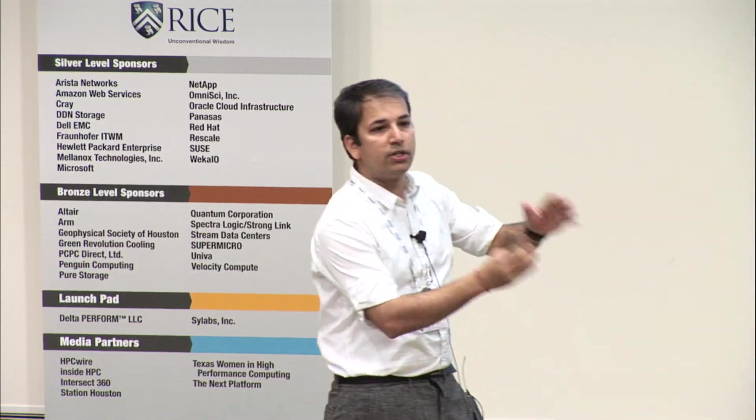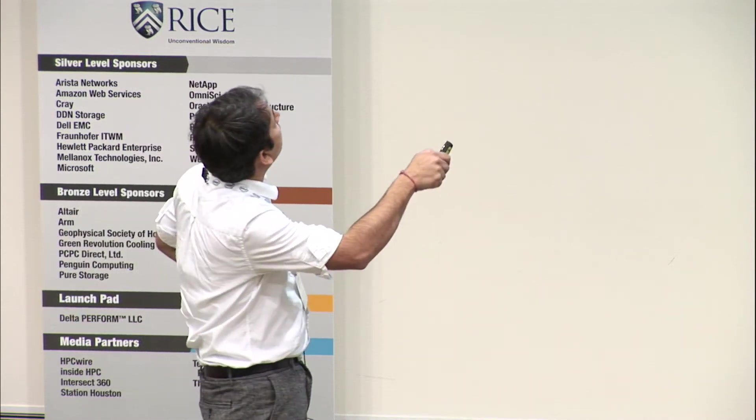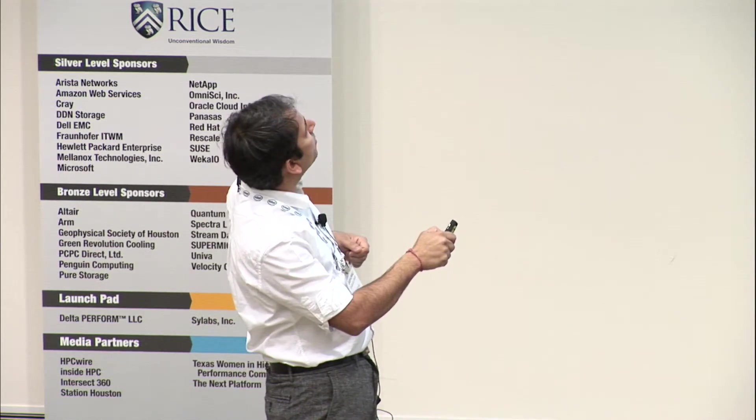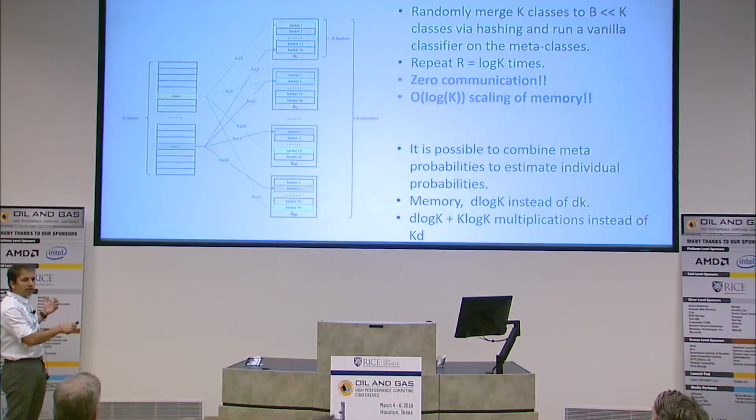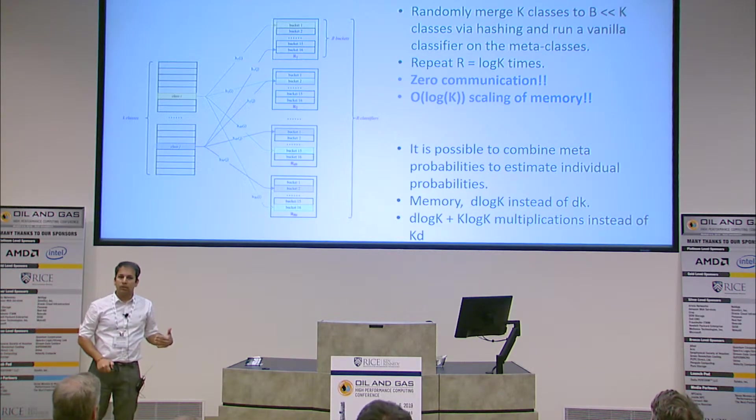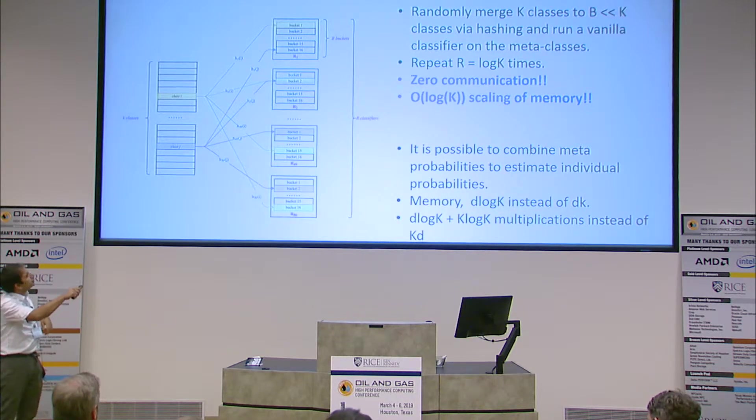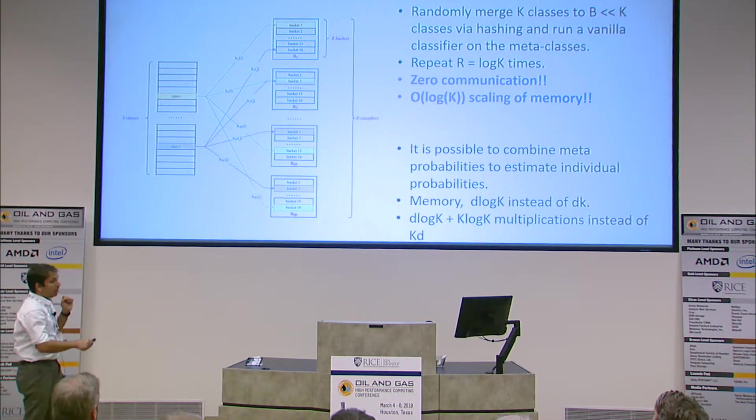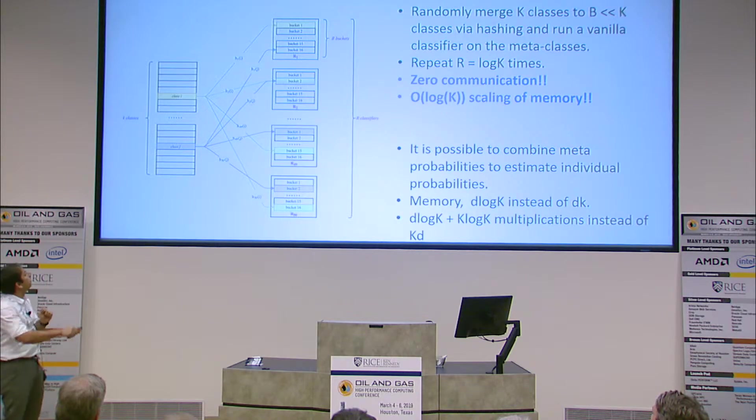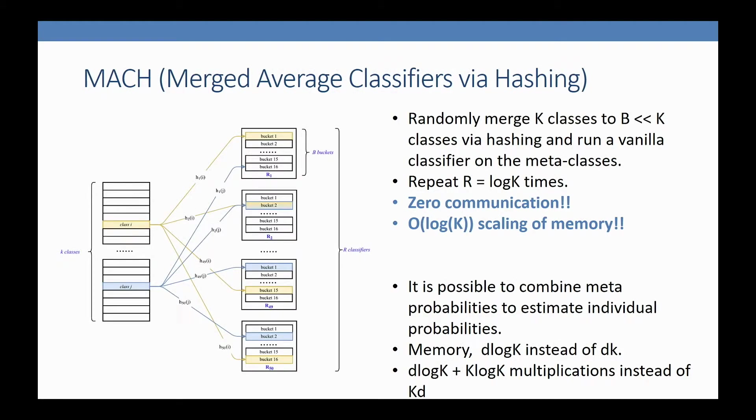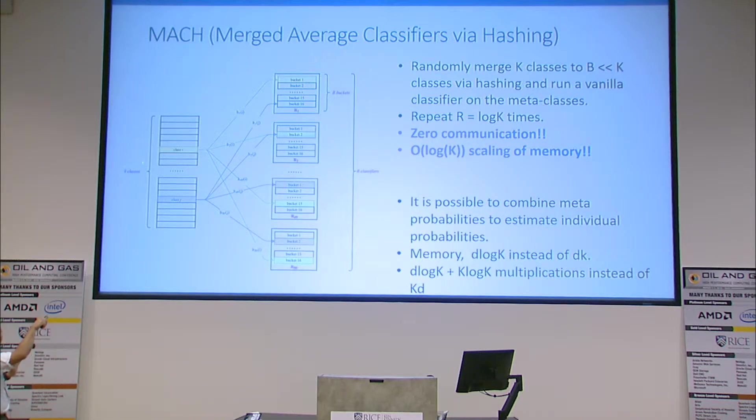Instead of having a big classifier predicting each class probability, I take a random hash function and map all these into B buckets. Every bucket is a combination of randomly chosen classes—orange, mango, cars, buses all merged. I have a classifier that predicts these meta-classes. It tells me bucket 15 has higher probability here, bucket 2 higher here, bucket 1 higher here. The claim is if I look at high probability buckets here, I can figure out the high probability class here. I'm only using the same classifier, but the number of classes are much smaller.